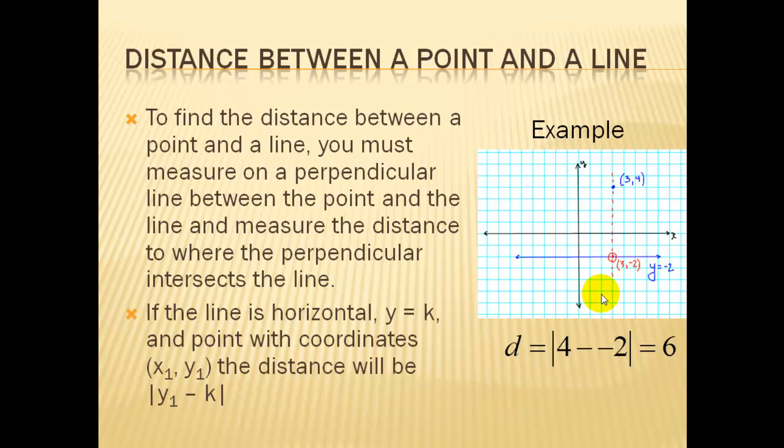So to get this distance, we just have to subtract the two y-coordinates. And distance is always a positive number, so we'll just take the absolute value here. Depending on whether the point is above or below the line, we might get a negative number. So in this case, our distance between this given point here and the line is 6 units.